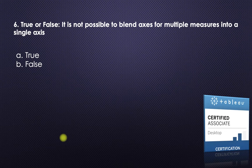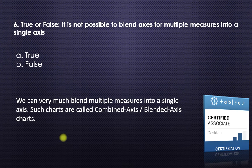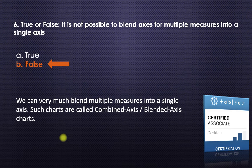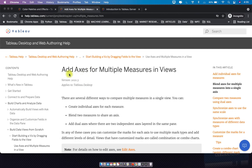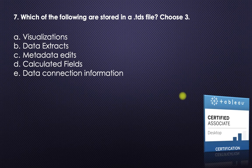True or false: it is not possible to blend an axis for multiple measures into a single axis. This is absolutely false — we can very much blend multiple measures into a single axis. Such charts are called combined axis or blended axis charts. I've made a video on this; I'll leave the link in the description. If you want to create these charts, search 'add axis for multiple measures in views' on Tableau Help.